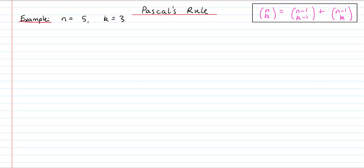In this example, using Pascal's Rule, we're going to look at the case when n equals 5 and k equals 3. So what we get is 5 choose 3, which equals n minus 1 choose k minus 1, giving us 4 choose 2, plus n minus 1 choose k, giving us 4 choose 3. So we'll look at the 5 choose 3 term first.